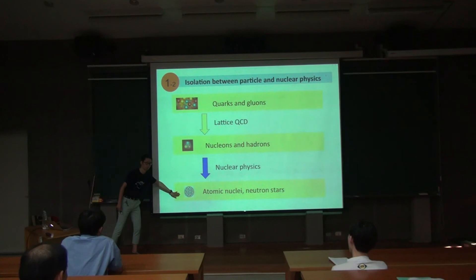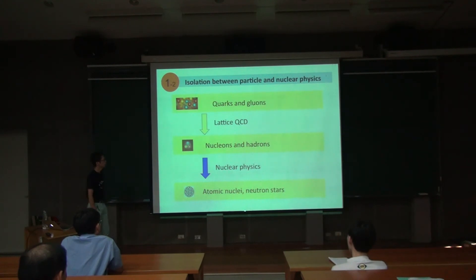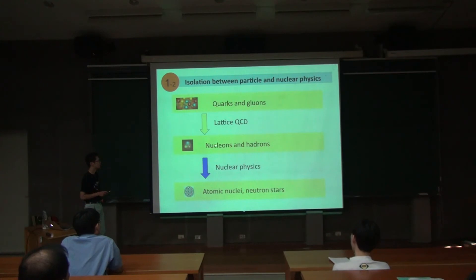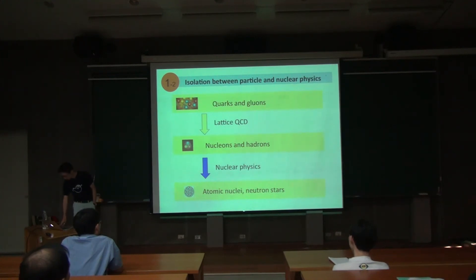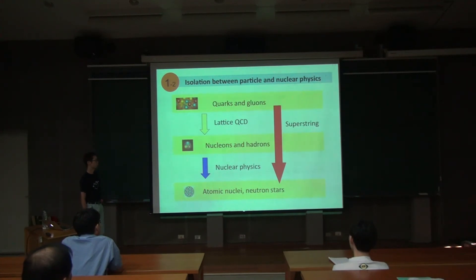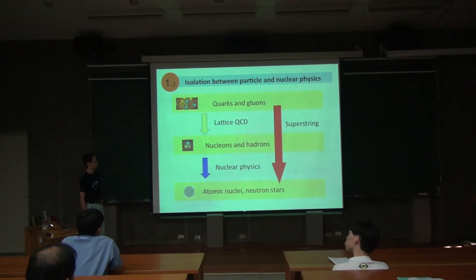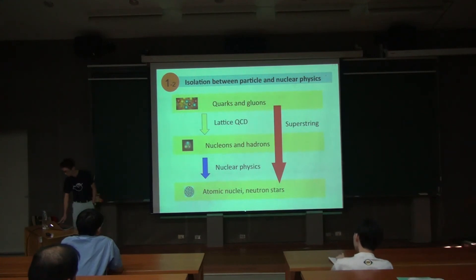So there are two steps. However, if you want to know the real physics happening at high density, then it's better not to have two steps like that. If there is a direct way from QCD to the nuclear physics, that's better. I'm saying that superstring theory may offer a way to get there directly from QCD. Why is that possible? The reason is that QCD is strongly coupled.